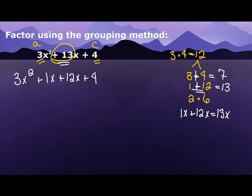And now my grouping starts. I look at the first two and say, what's in common with the first two? Well, 3 and 1 only have 1 in common, but they both have x's in them. So I'm going to take out an x.